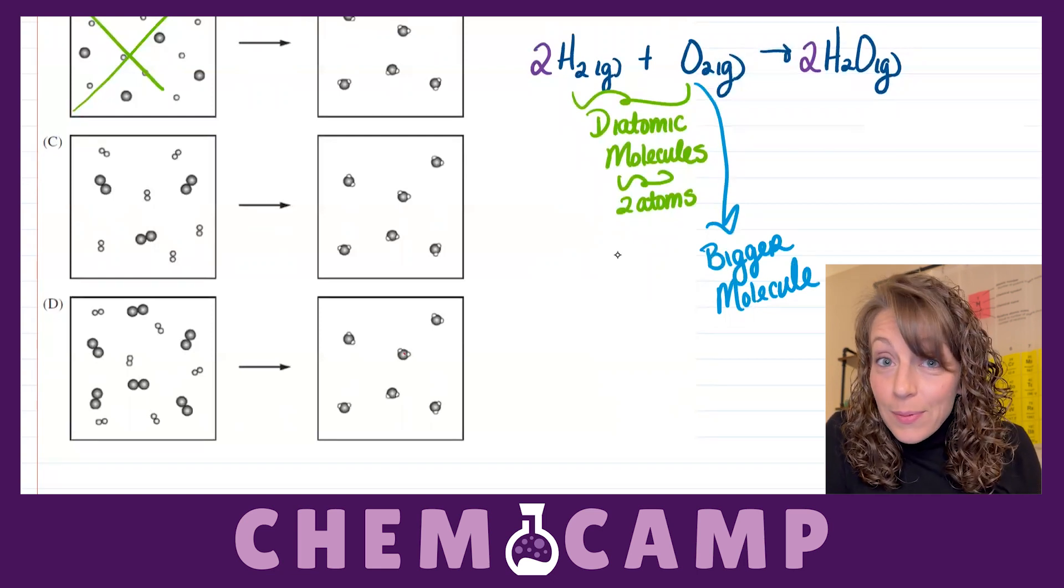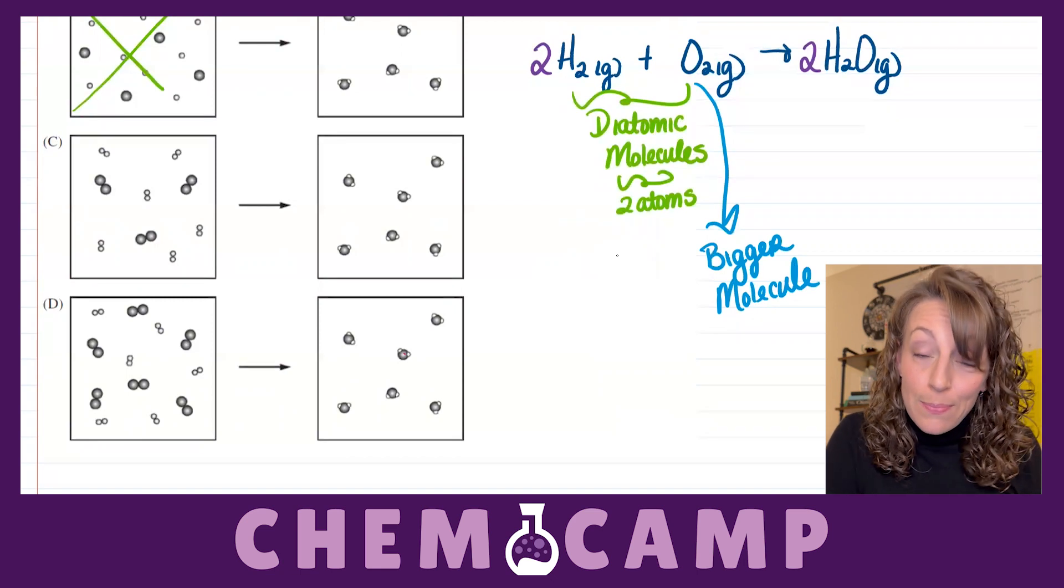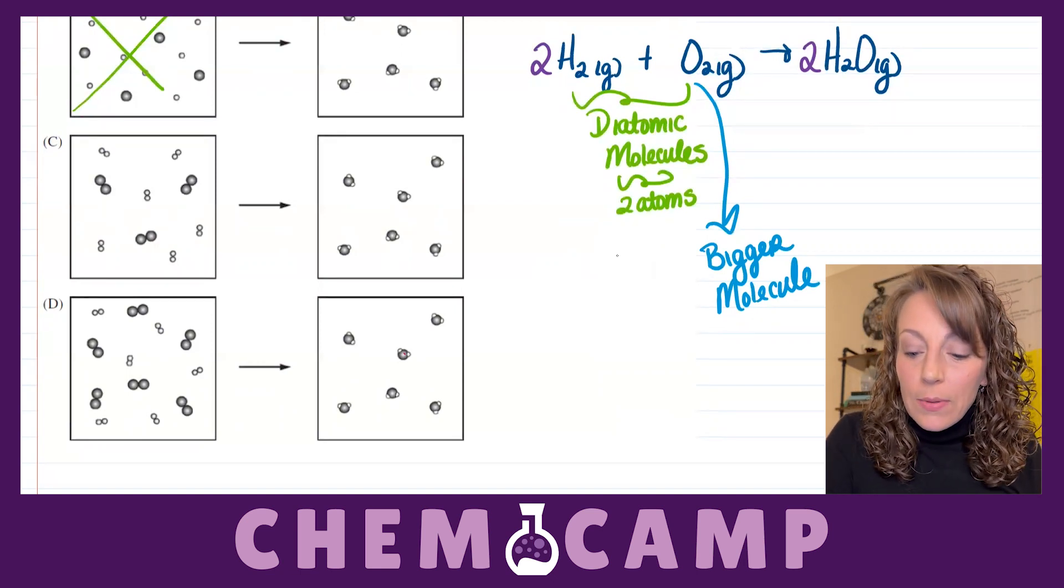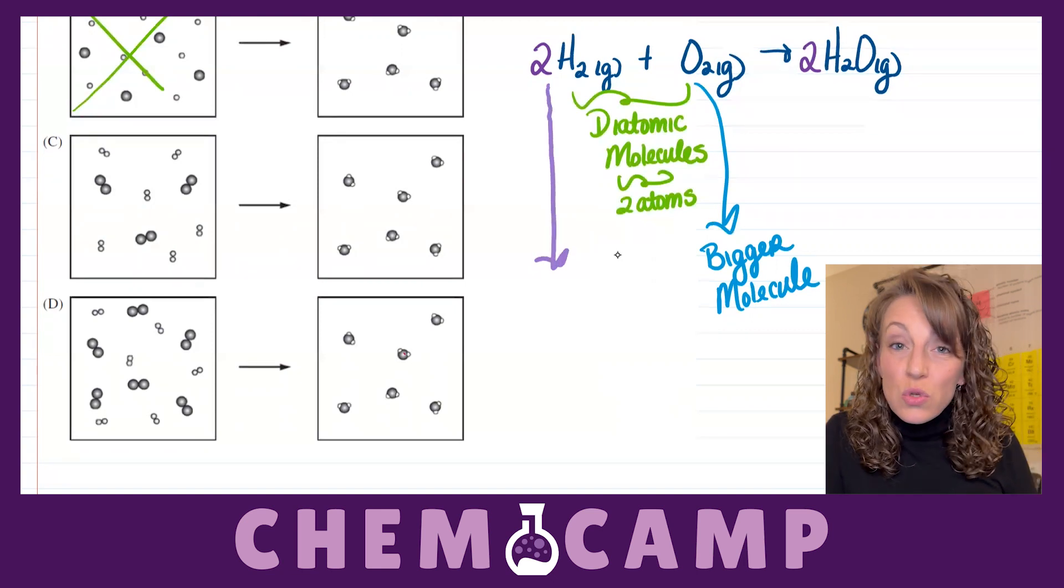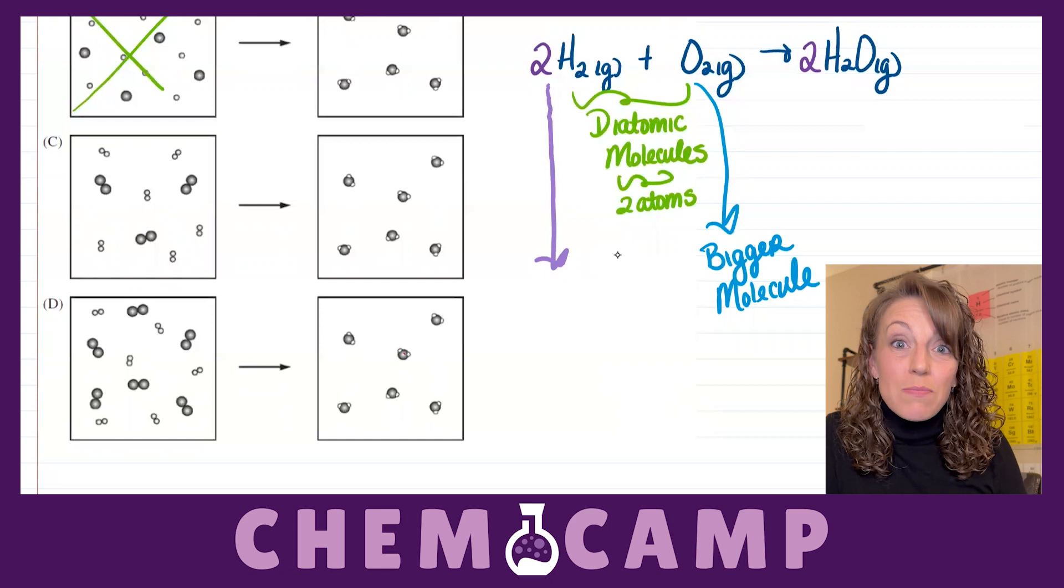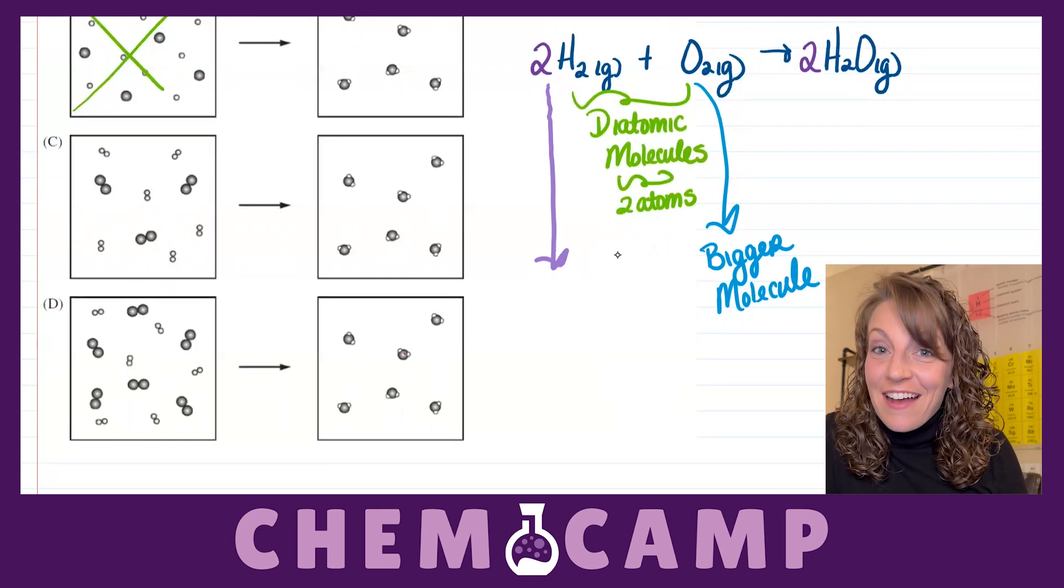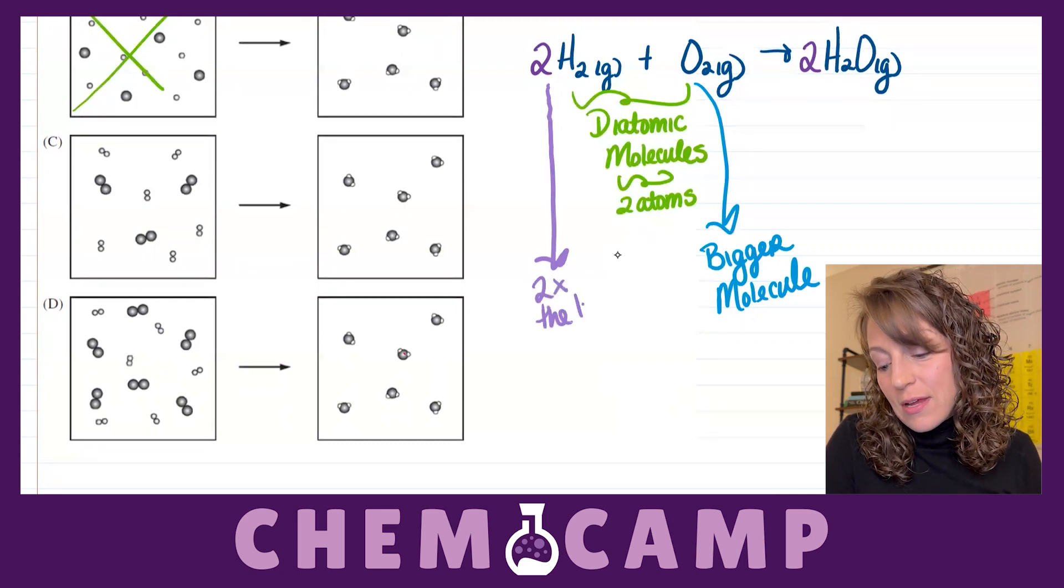The other piece of information that becomes really important here is our balancing of those atoms in the equation. Because if we take a look at our mole ratio, we need two times or twice as many of those hydrogen molecules than the oxygen ones. So two times the little guy.